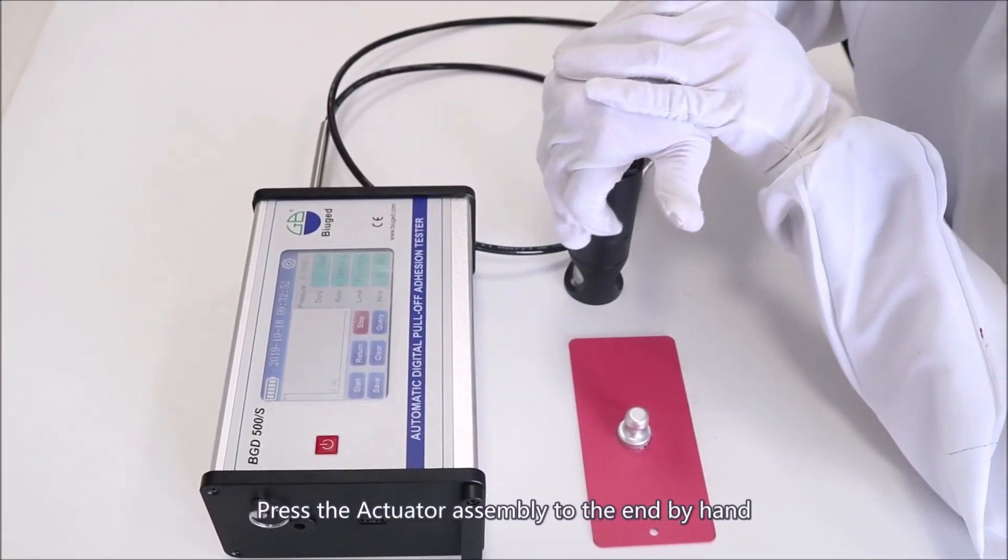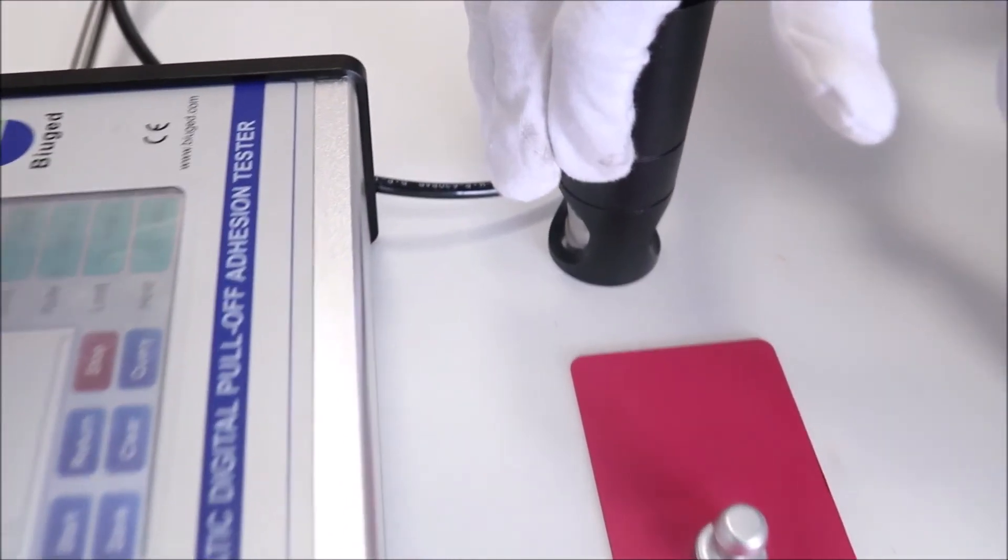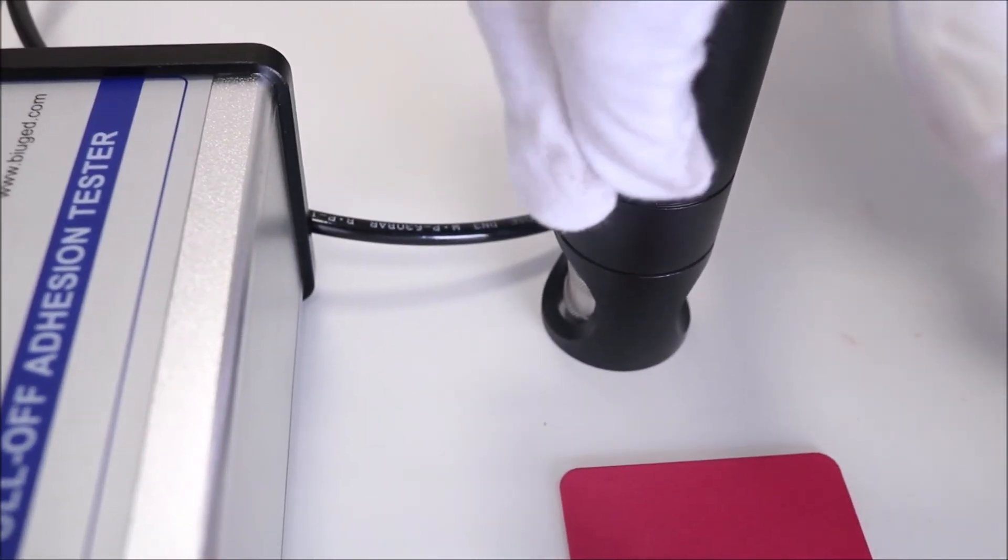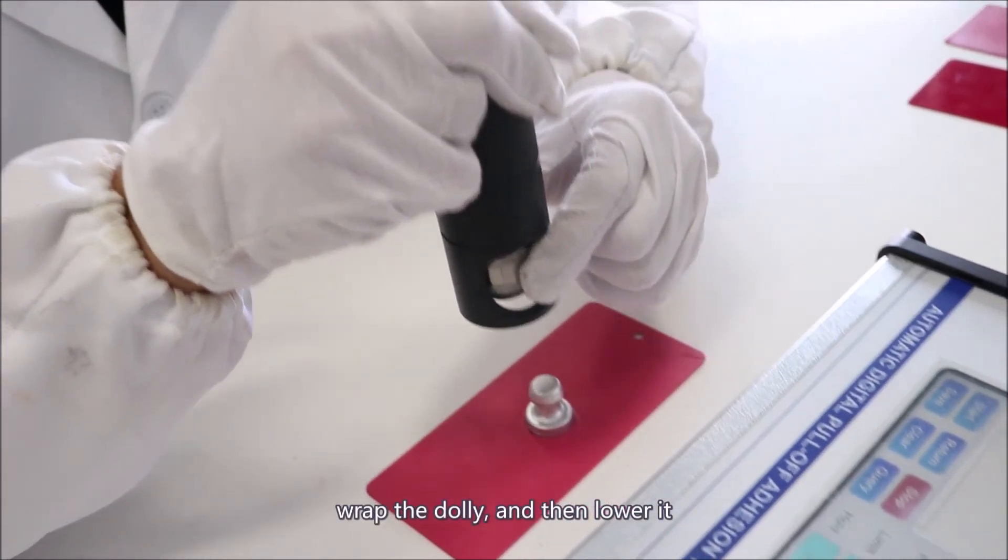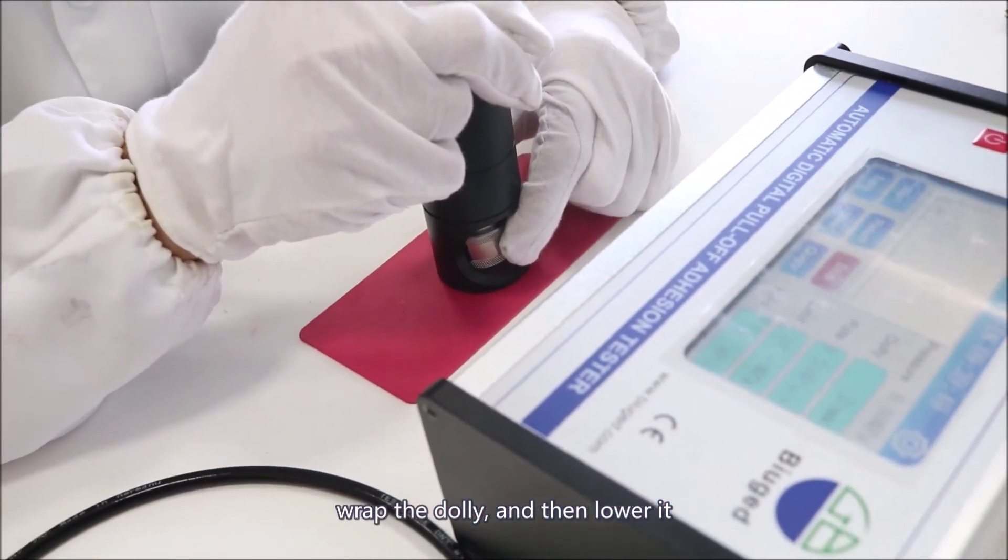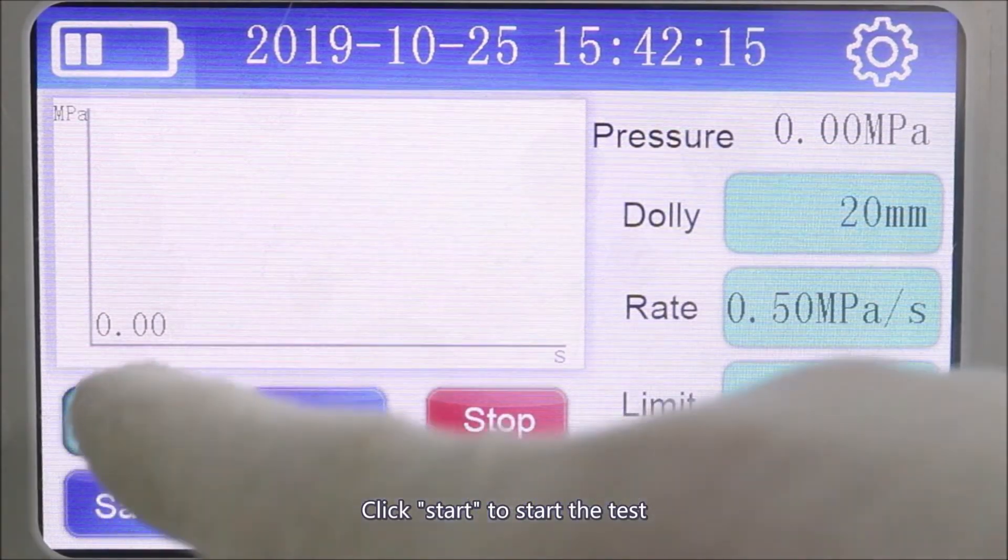Press the actuator assembly to the end by hand. Make the quick coupling up by hand, wrap the dolly, and then lower it. Click start to start the test.